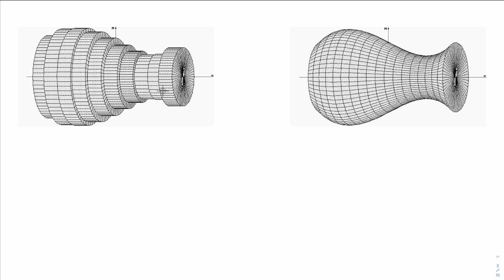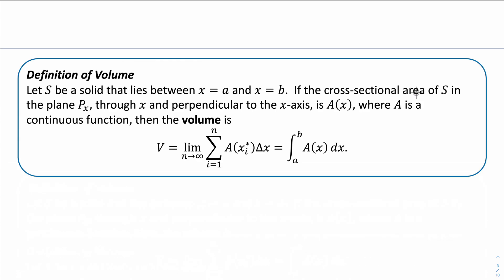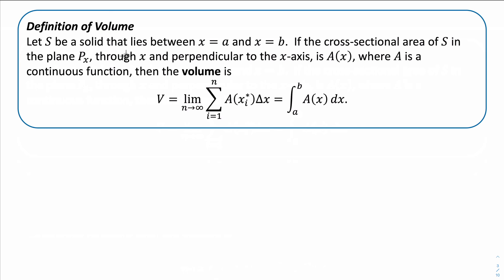Now, if we wanted a more accurate estimation, we would divide this region into more and more sub-intervals. Ultimately, we'd make the sub-interval as small as possible — essentially just a two-dimensional slice — which allows us to find the volume more accurately. This idea is what gives us our definition of volume.